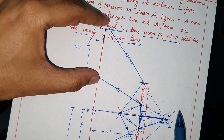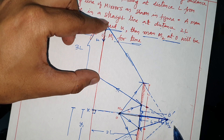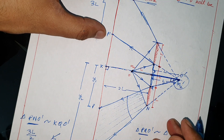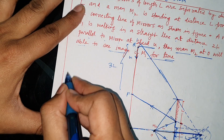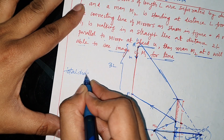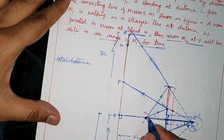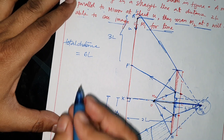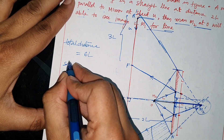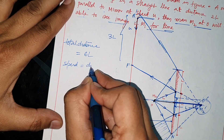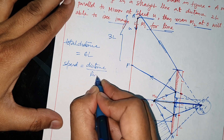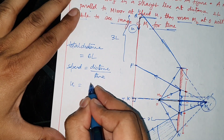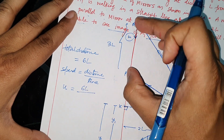So this is the region where M1 will be visible to M2. The total distance M1 travels through the field of view is the total distance. Speed equals distance upon time, and the speed is U. The total distance covered is 3L plus 3L, which equals 6L.